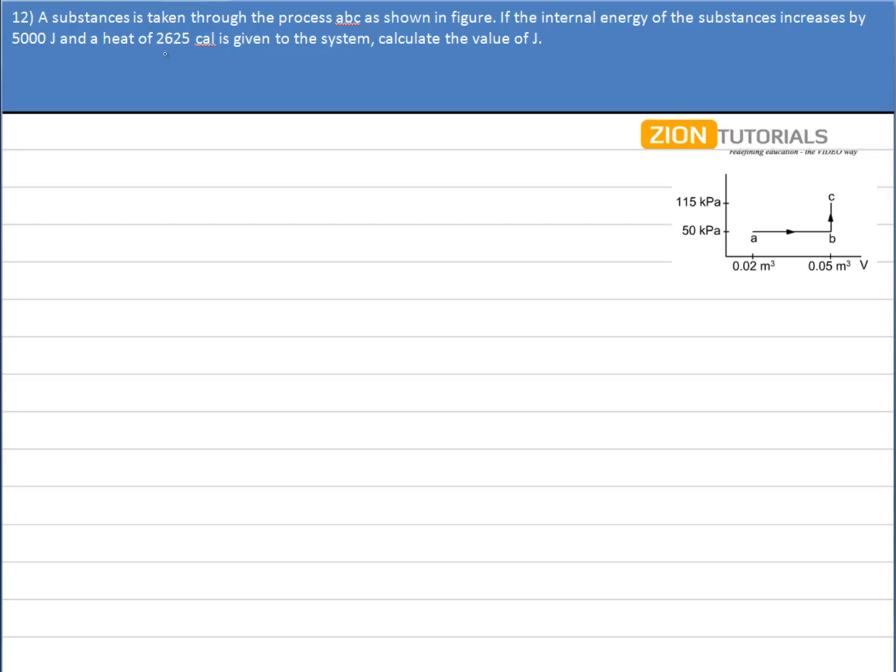A substance is taken through the process ABC as shown in figure. If the internal energy of the substance increases by 5,000 J and a heat of 2625 calories is given to the system, calculate the value of J.